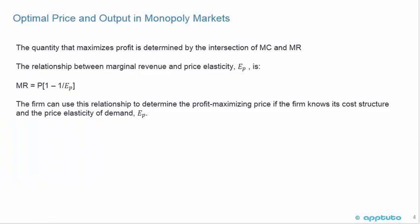Moving on to optimal price and output in monopoly markets: the quantity that maximizes profit is determined by the intersection of marginal cost and marginal revenue. There is a relationship between marginal revenue and price elasticity — marginal revenue equals the price times (1 minus 1 divided by the price elasticity). A firm in a monopoly market can use this relationship to determine the profit-maximizing price if it knows its cost structure and price elasticity of demand.